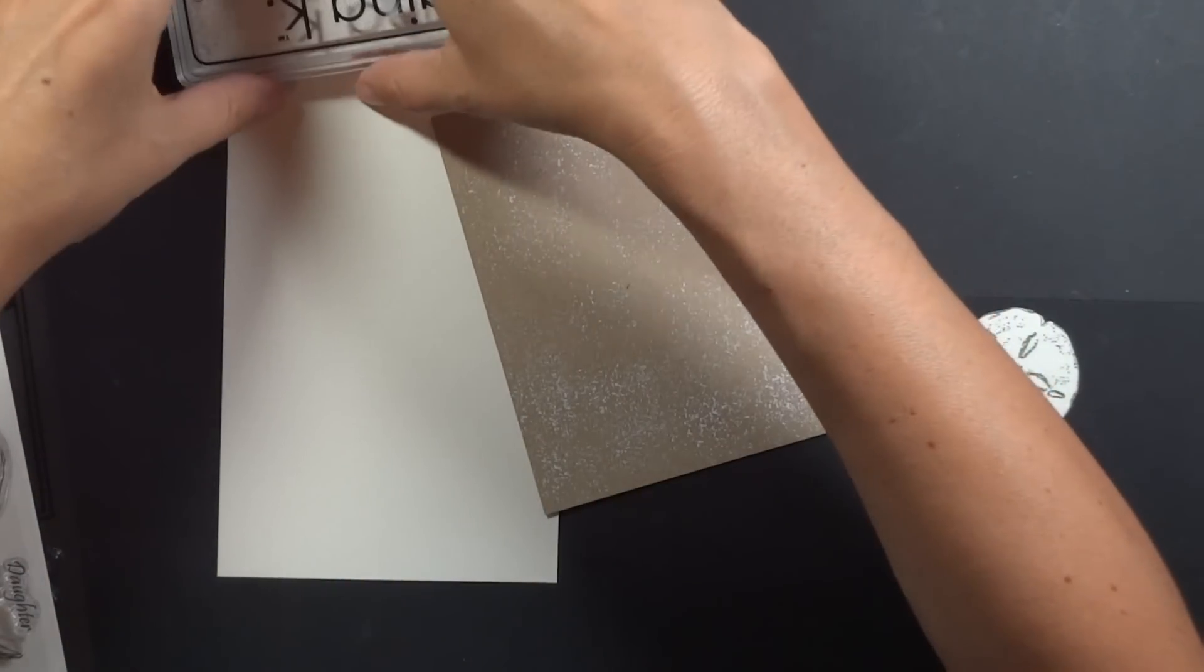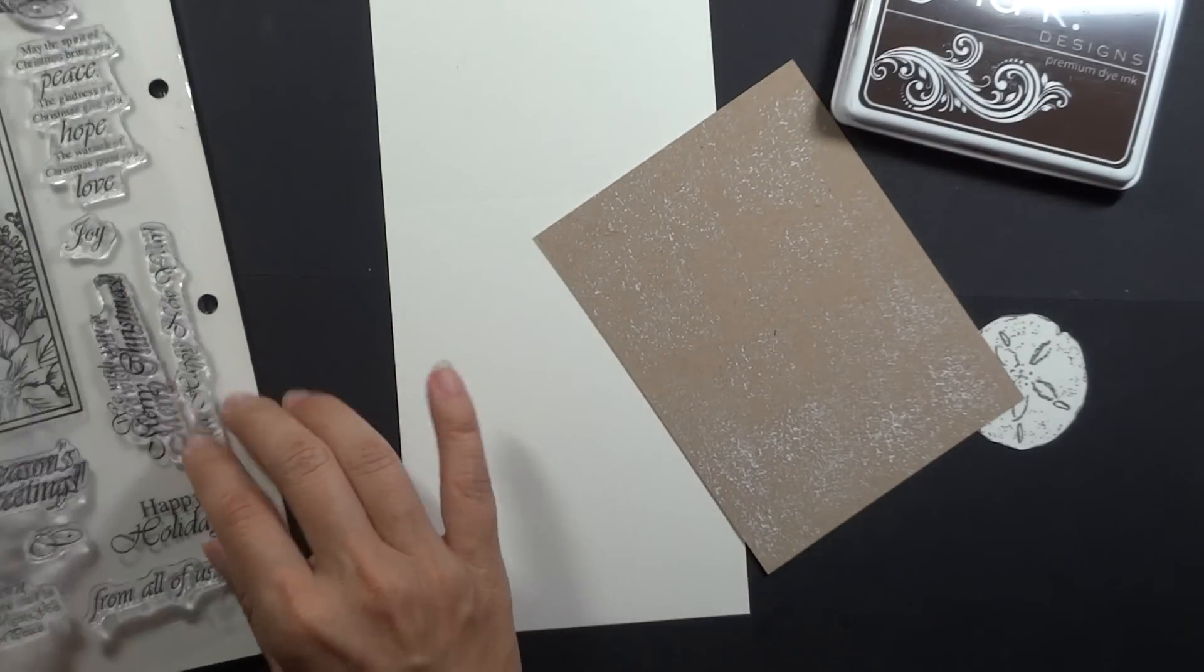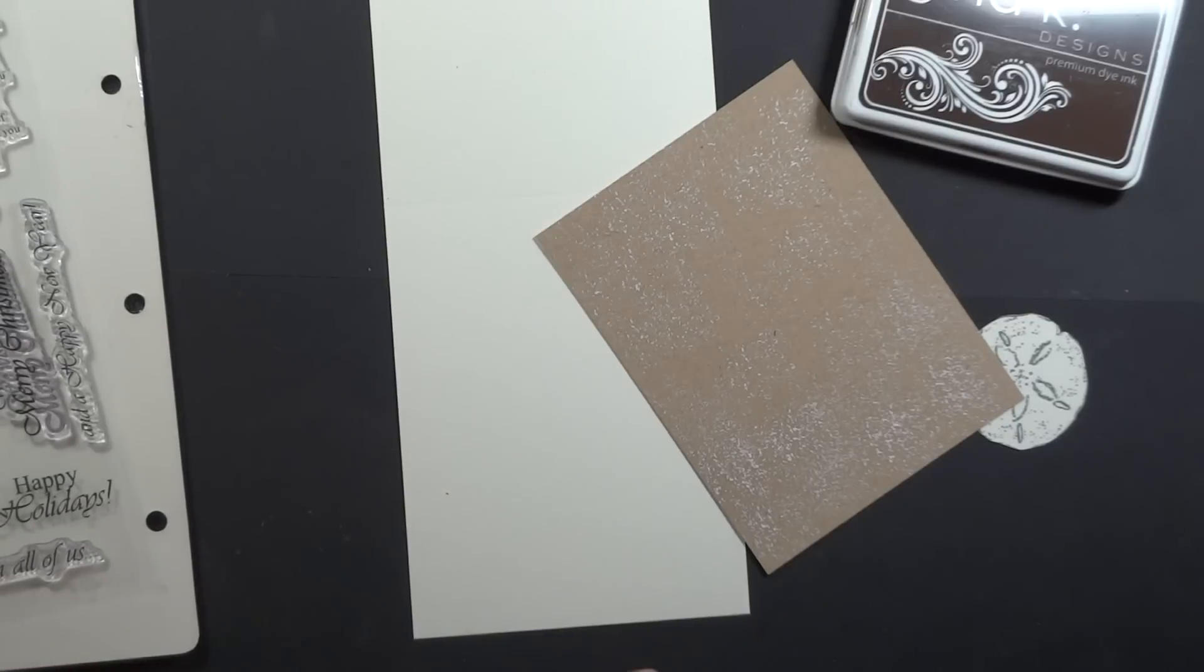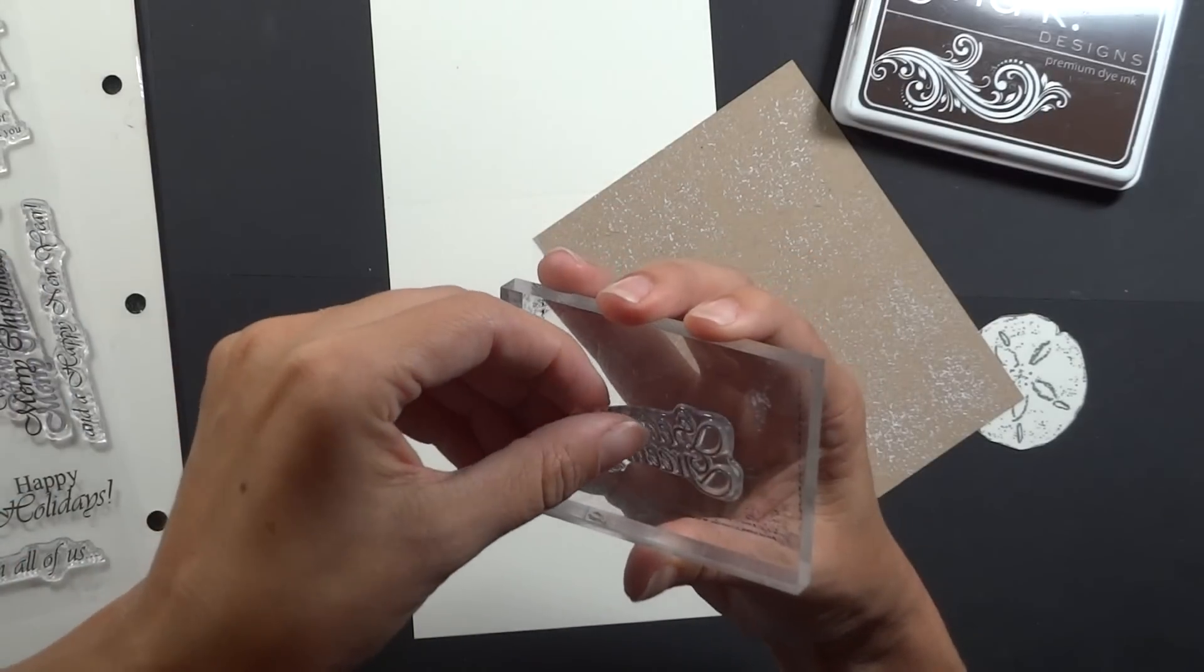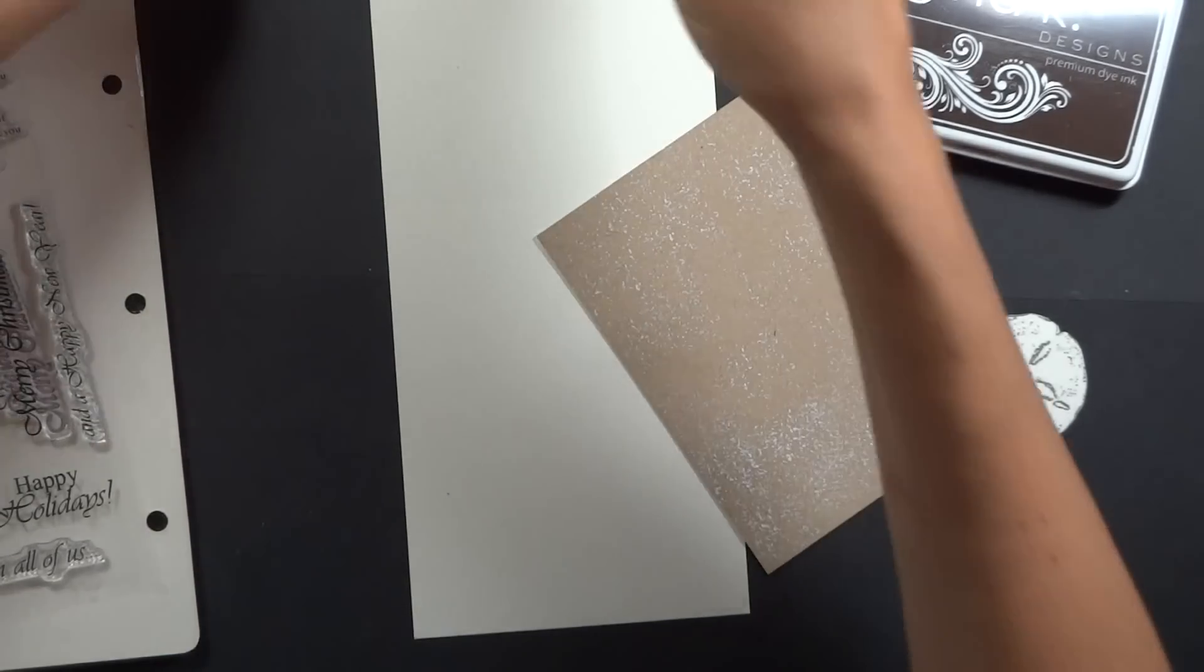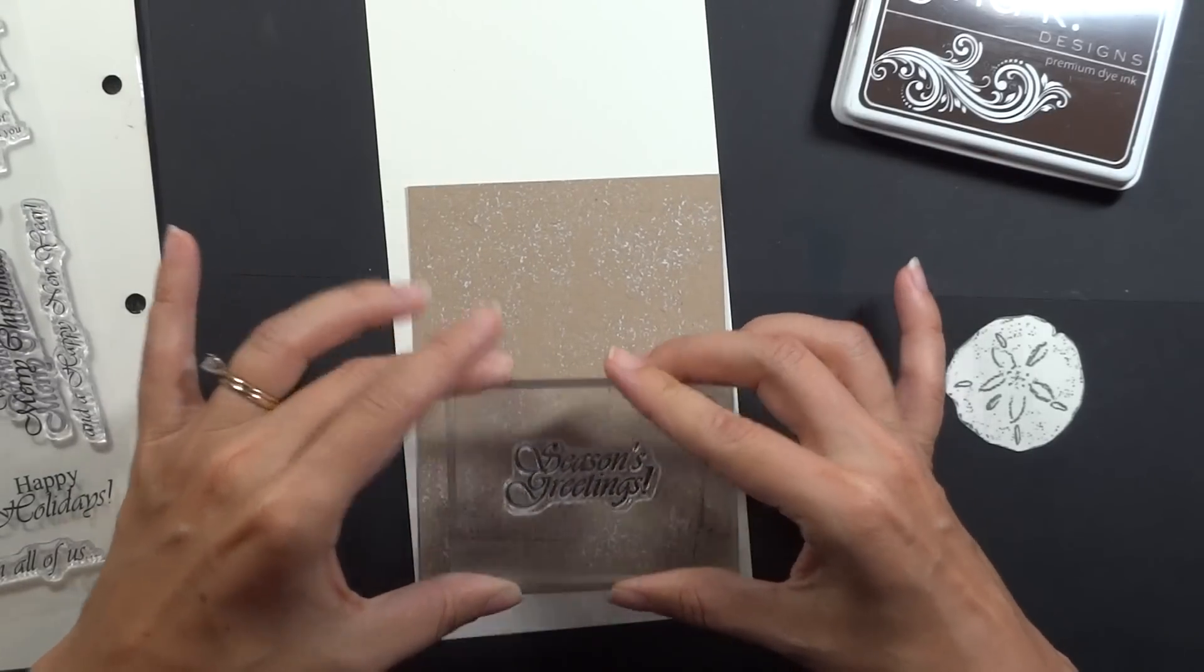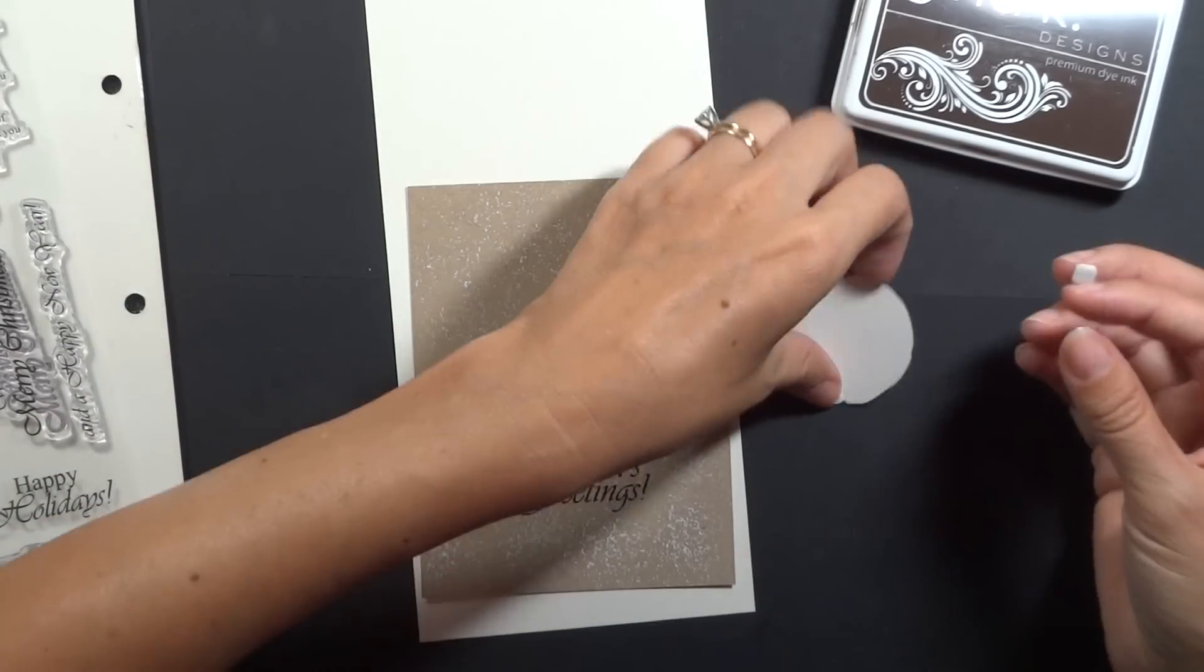And then I am going to do another greeting from the Festive Frame so I'm going to do season's greetings on this one. So I included lots of different ones so that you have a lot of different options and if you're using this set year after year you can do a different greeting each time. So I'm just going to put this center there on the bottom so my ornament can hang above it and I'm going to put some pop dots on the back of this.